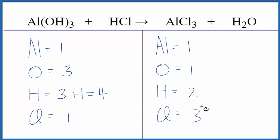Let's start by balancing the chlorines here. We could put a three in front of the HCl. That would mean that one times three, that would give us three chlorines, so they're balanced.